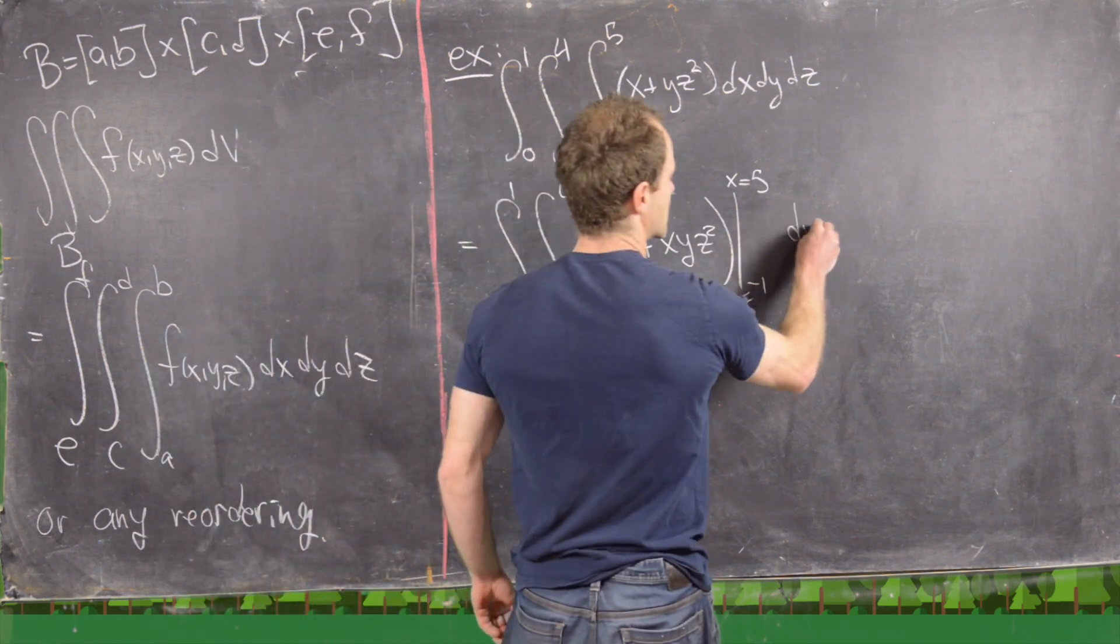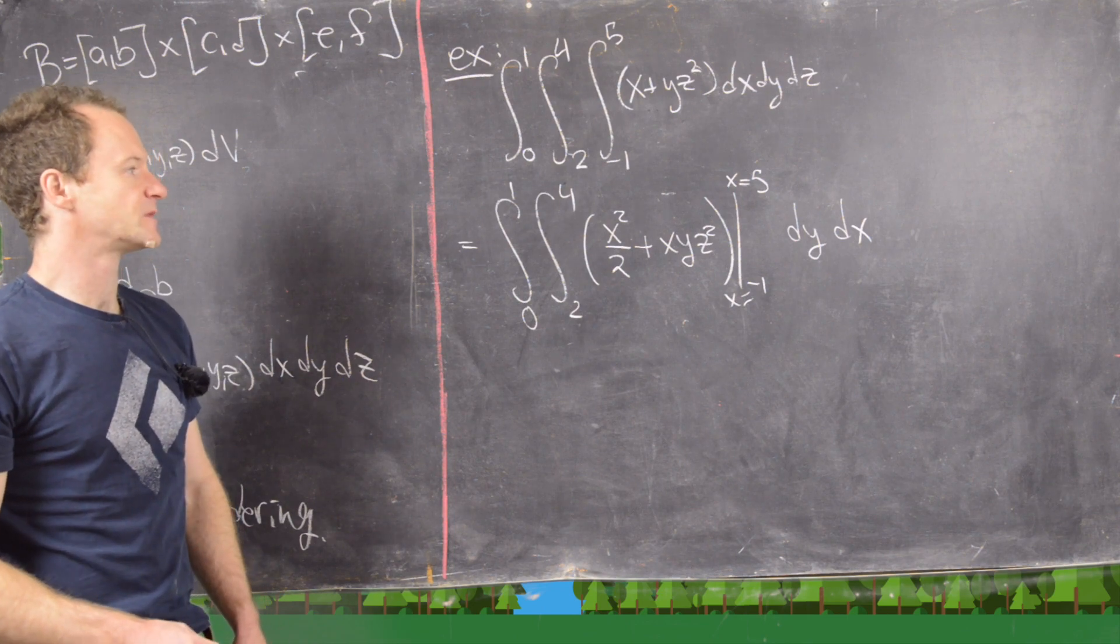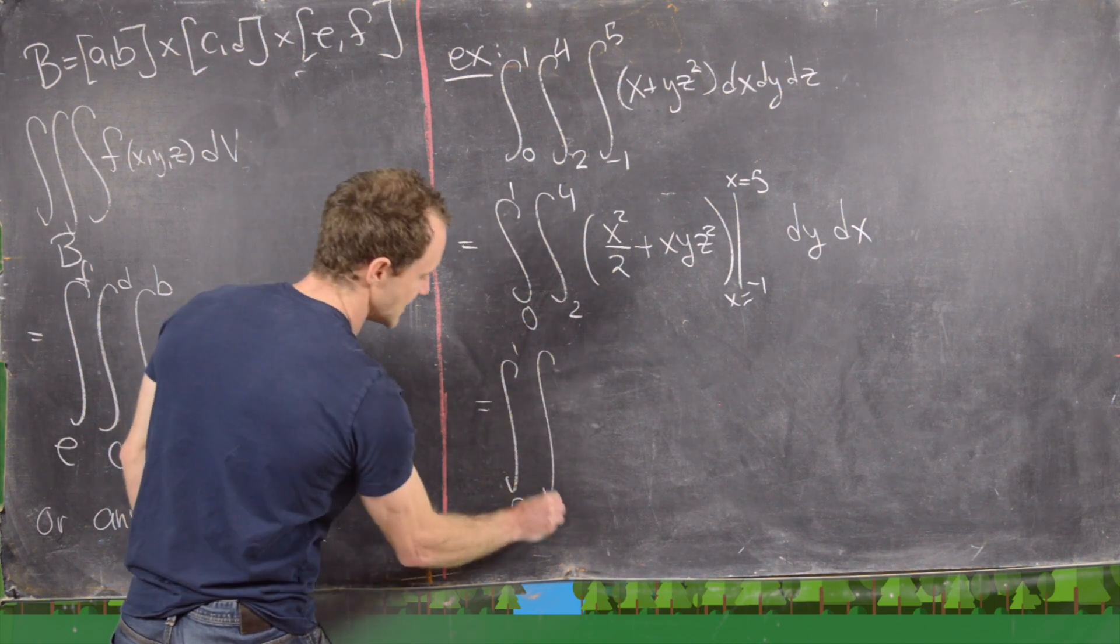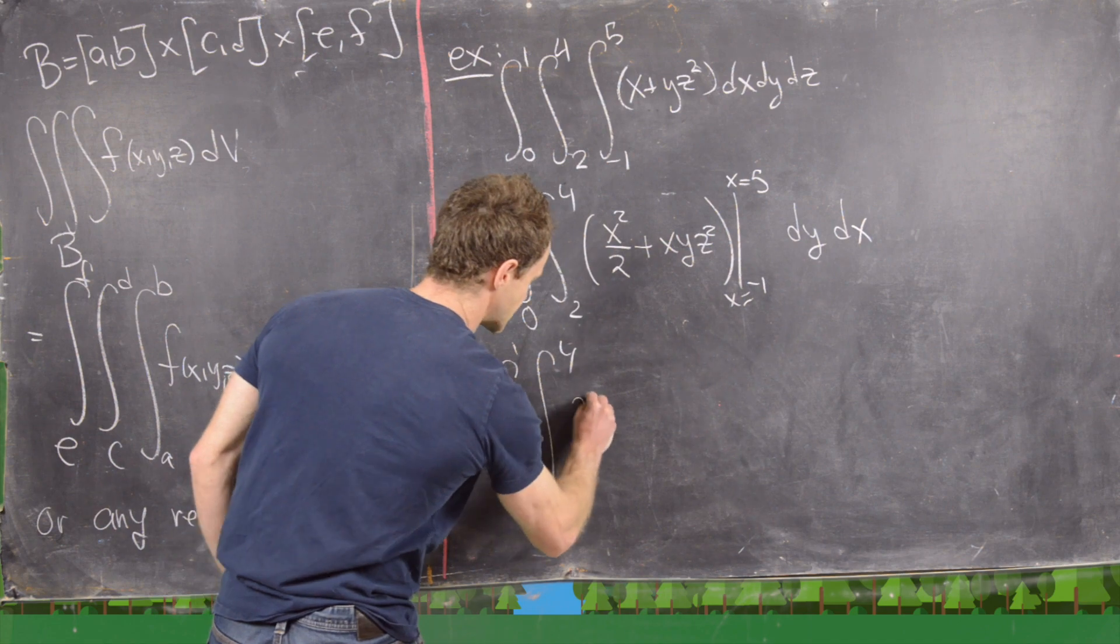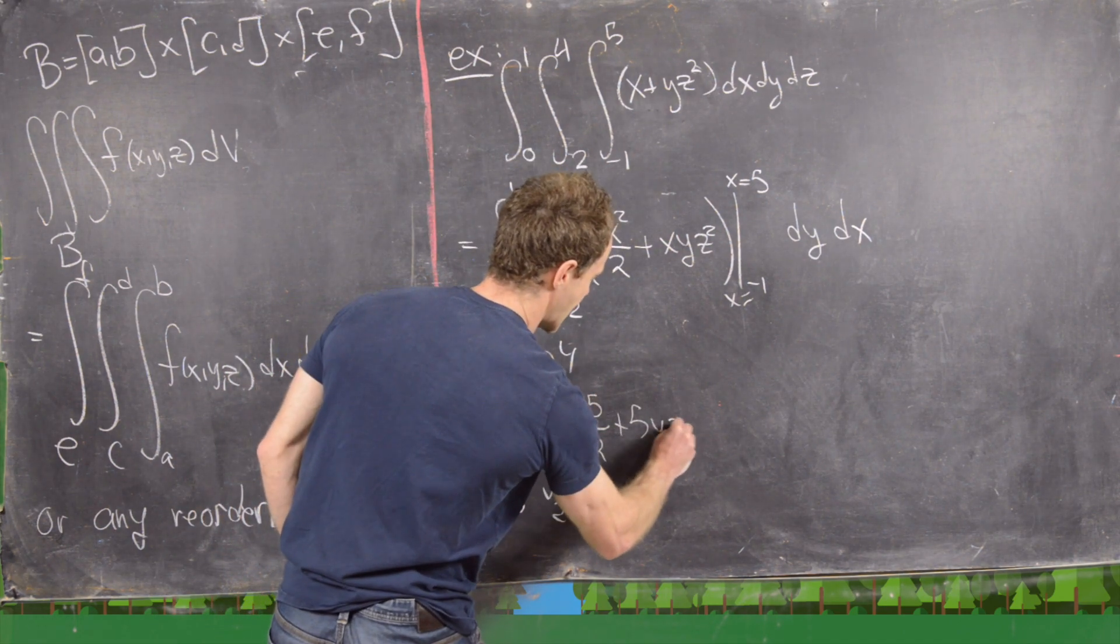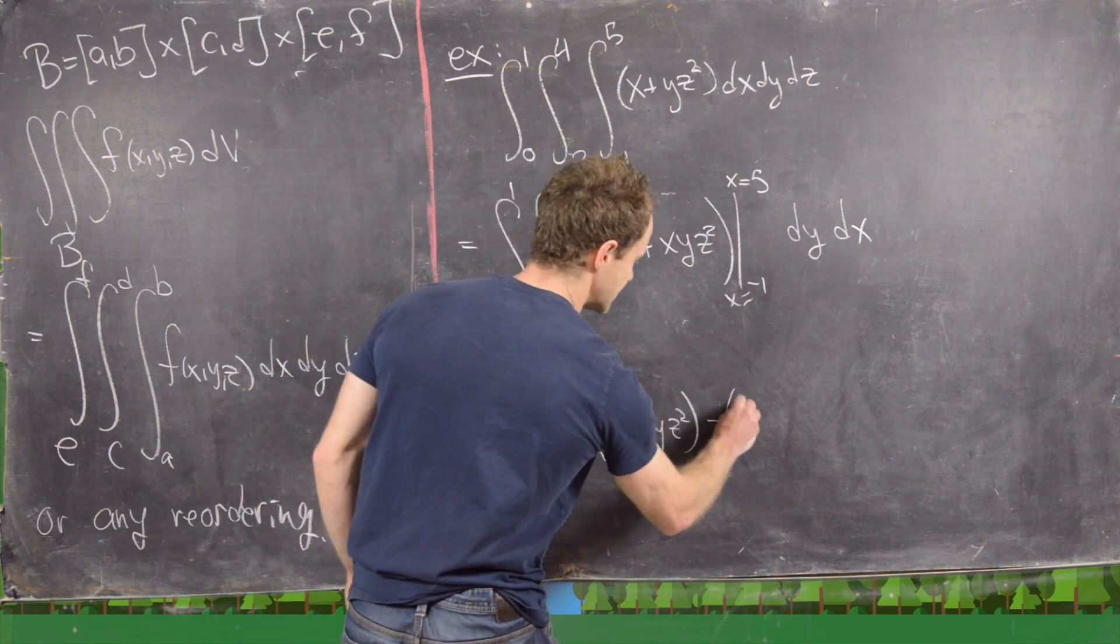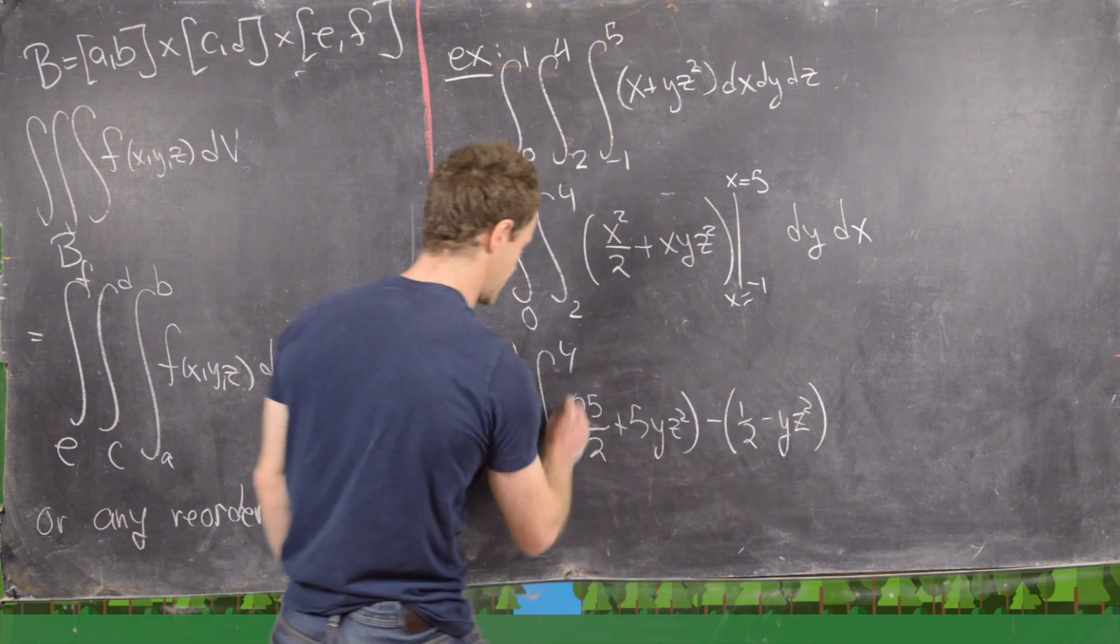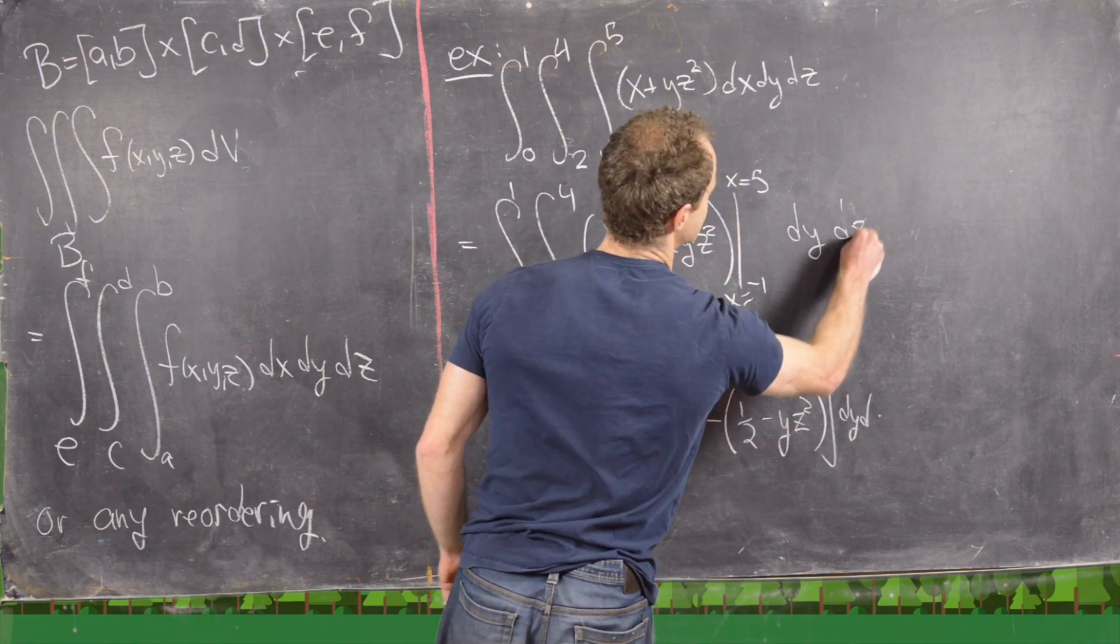Now that is all still inside this double integral dy, dz. So let's see what we get for that. This is going to be the integral from 0 to 1, the integral from 2 to 4. If we plug 5 into this, we'll get 25 over 2 plus 5y z squared minus, if we plug negative 1 into this, we'll get a half minus y z squared.